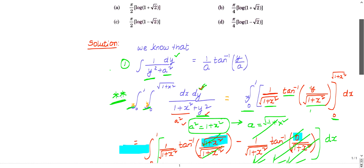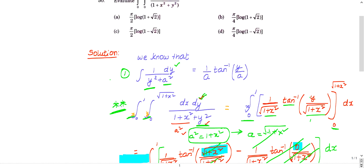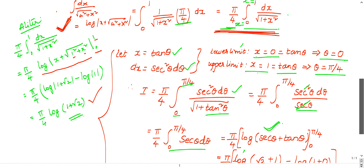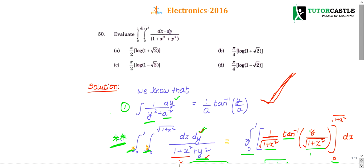So I hope you understood how to convert this double integral to single integral by comparing with this first relation, first formula. In this way we will solve this question. So the right choice is what we got? Pi by 4 log of 1 plus root 2. So yeah, option B is the right choice. So this is the end of this question. If you have any queries, post them in the comment box and subscribe the channel for getting more updates. Thank you.